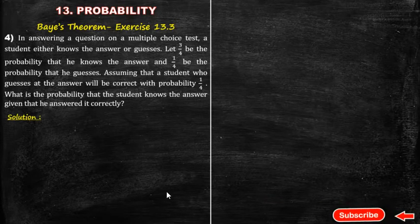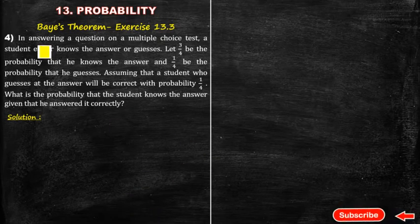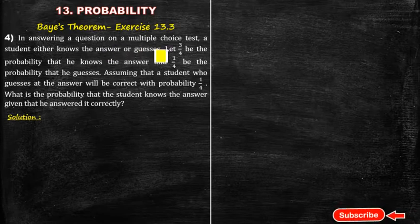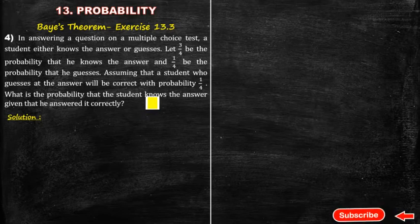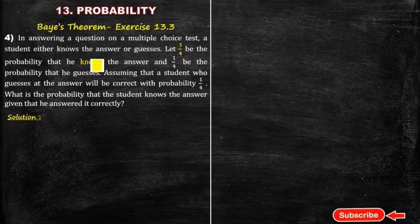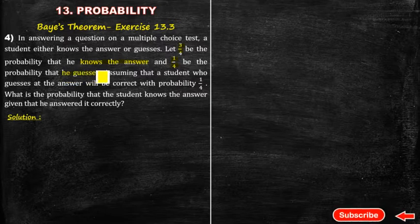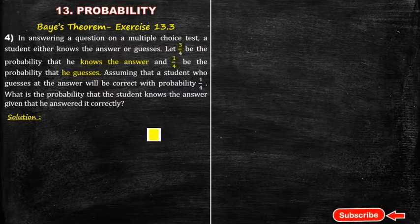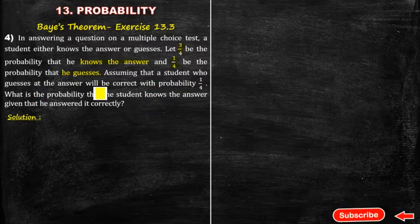What is the given exercise 13.3, question number 4? In answering the questions on a multiple choice test, a student either knows the answer or is guessing. Let 3/4 be the probability of knowing the answer and 1/4 be the probability of guessing. Assume that the student who guesses the answer will get it correct with probability 1/4.